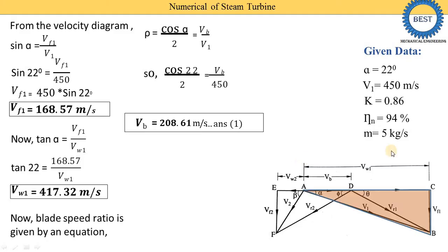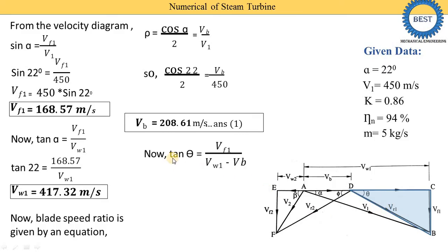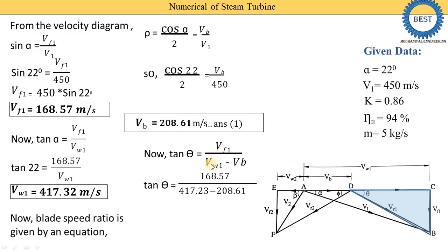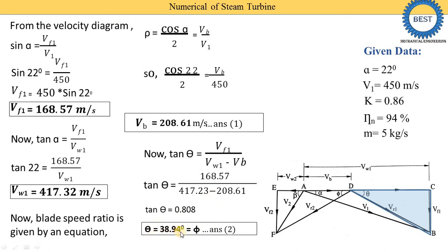The first triangle (alpha angle triangle) is solved. Now we find theta and Vr1 from the next triangle. Tan theta equals Vf1 divided by CD, where CD equals Vw1 minus Vb. We use tan theta because we don't know the hypotenuse Vr1 — we only know the two sides. Putting in the values: tan theta equals 0.808, so theta equals tan inverse of 0.808, giving theta equal to 38.94 degrees.